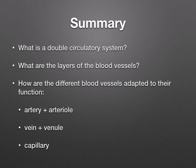In summary, a double circulatory system is how blood travels through the heart twice on one complete circuit of the body, via the pulmonary circuit and the systemic circuit. The three layers of blood vessels are the tunica externa, tunica media, and tunica intima. We also discussed how the different blood vessels are adapted to their functions, looking at the structural differences, functional differences, and differences in the transport of blood between arteries, veins, and capillaries.